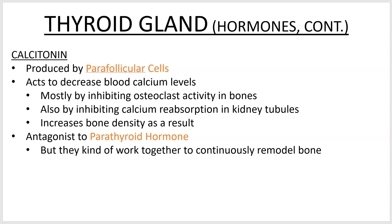One other hormone is calcitonin, produced by the parafollicular cells. If you think thyroid hormone, you're thinking the follicles and the colloid; if you think calcitonin, think the parafollicular cells — the spaces in between. This hormone decreases blood calcium levels. Osteoclasts, if you remember from ANP1, are the cells that break down bone. So if you're decreasing blood calcium levels, the calcium has to go somewhere — generally into the bones. If you stop the cells that break down bone, you'll have a net increase in bone density that follows from that decrease in blood calcium.